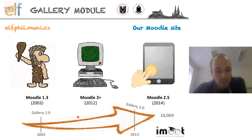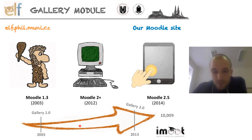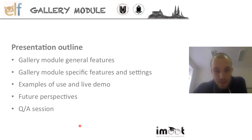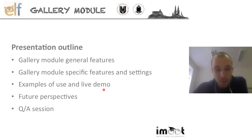We are currently on Moodle 2.5, but we are planning to switch to 3.7 during the summer. It's always the summer time, so we always skip one version, because there's only time to do it during the summer break where there are no teachers and students, so we have enough time for testing. I'll be talking about the module general features, then some more advanced features and settings, a live demo with examples, and then some future perspectives for further development. Happy to take questions after that.